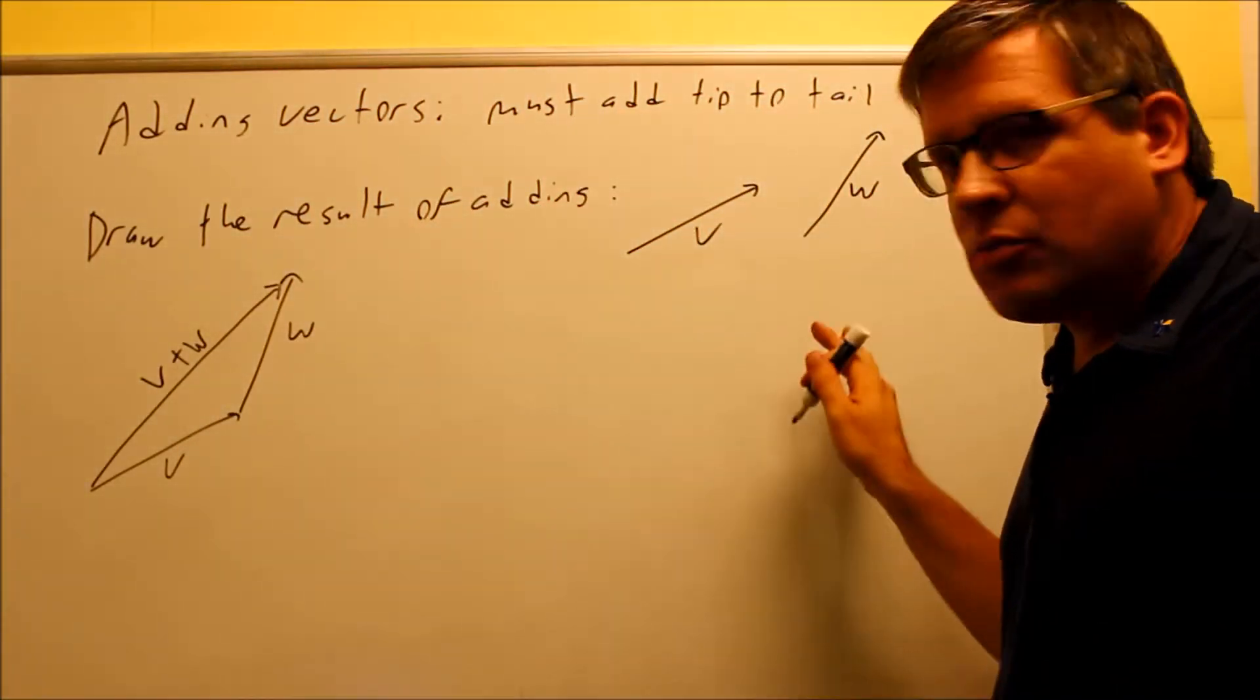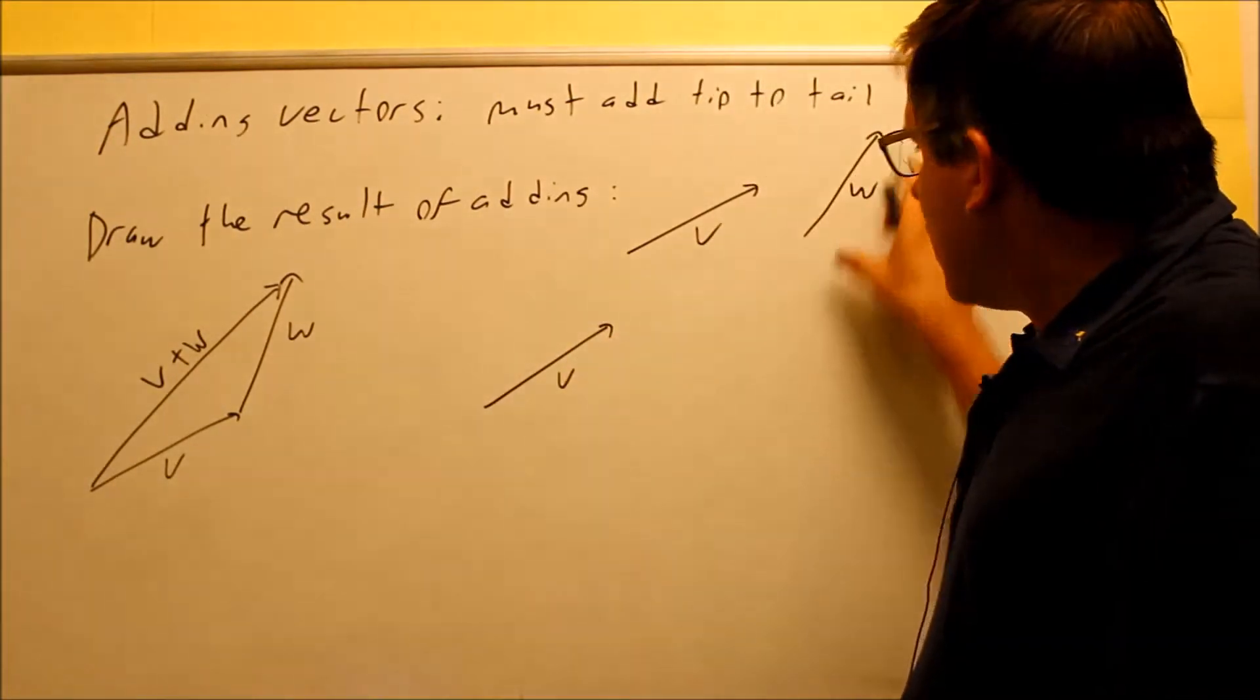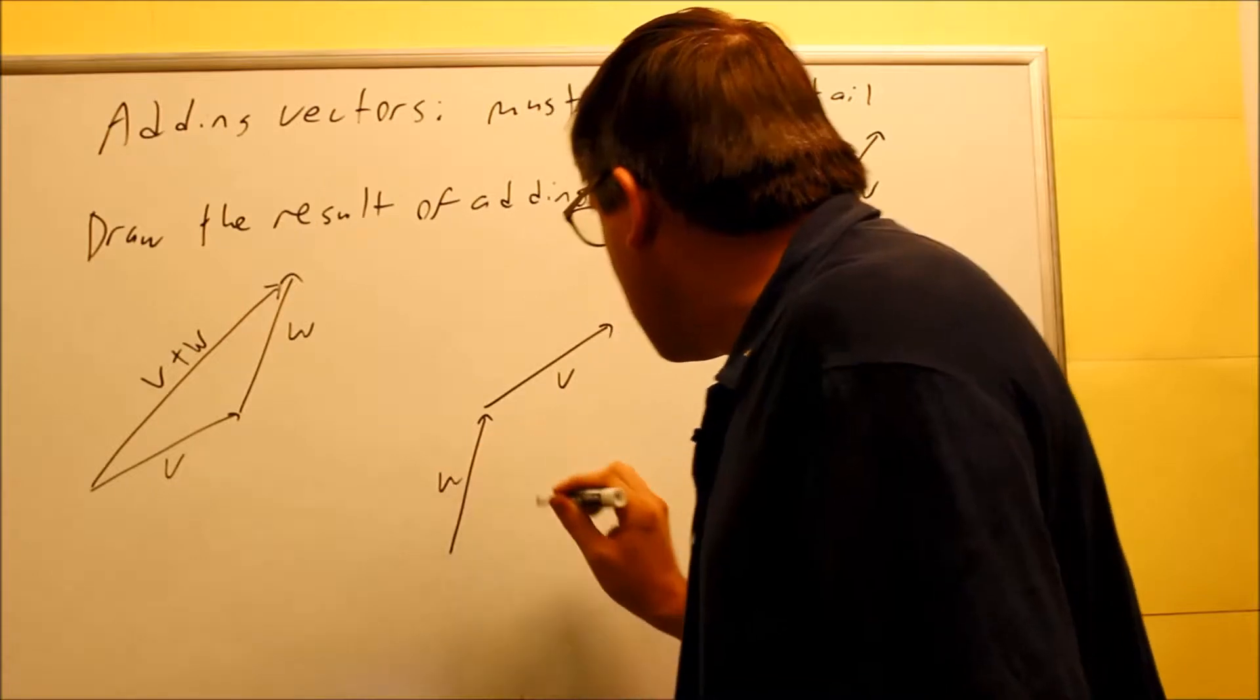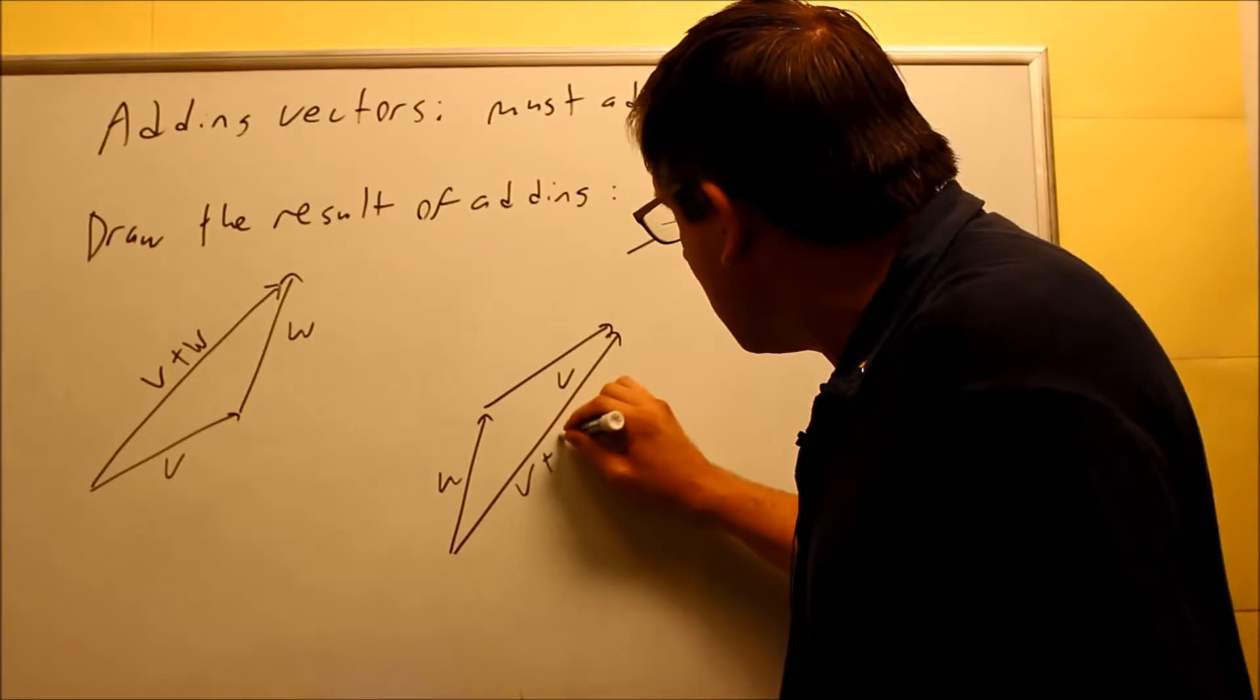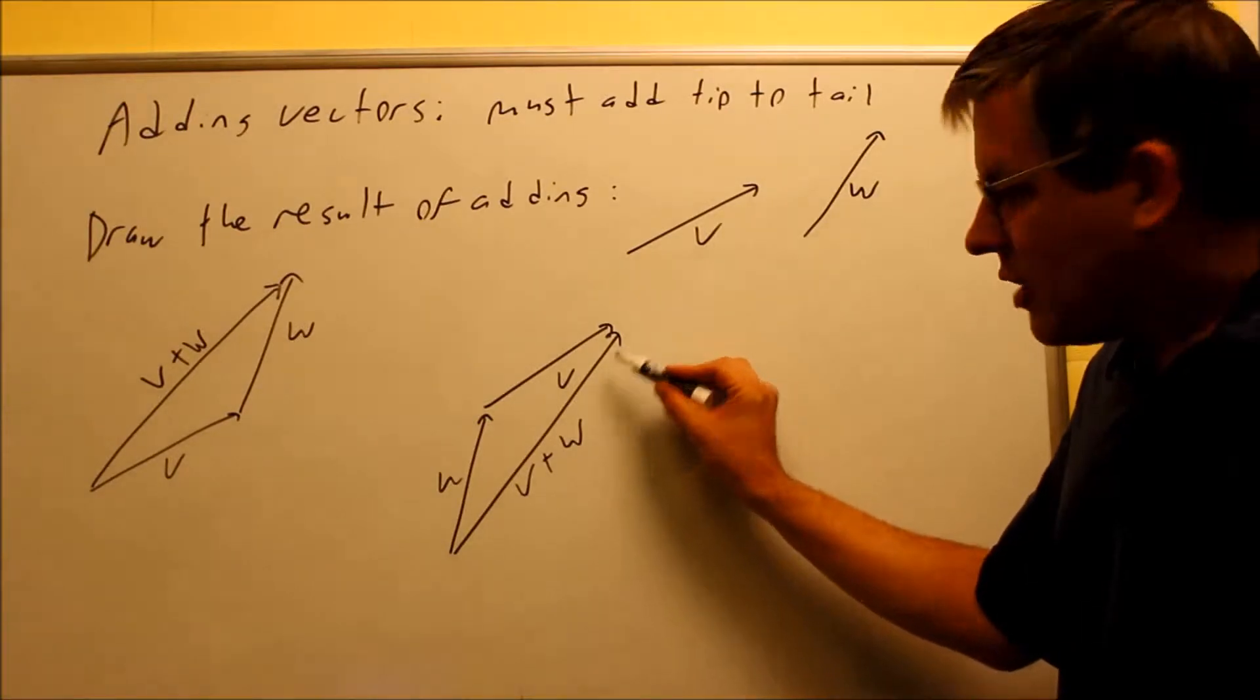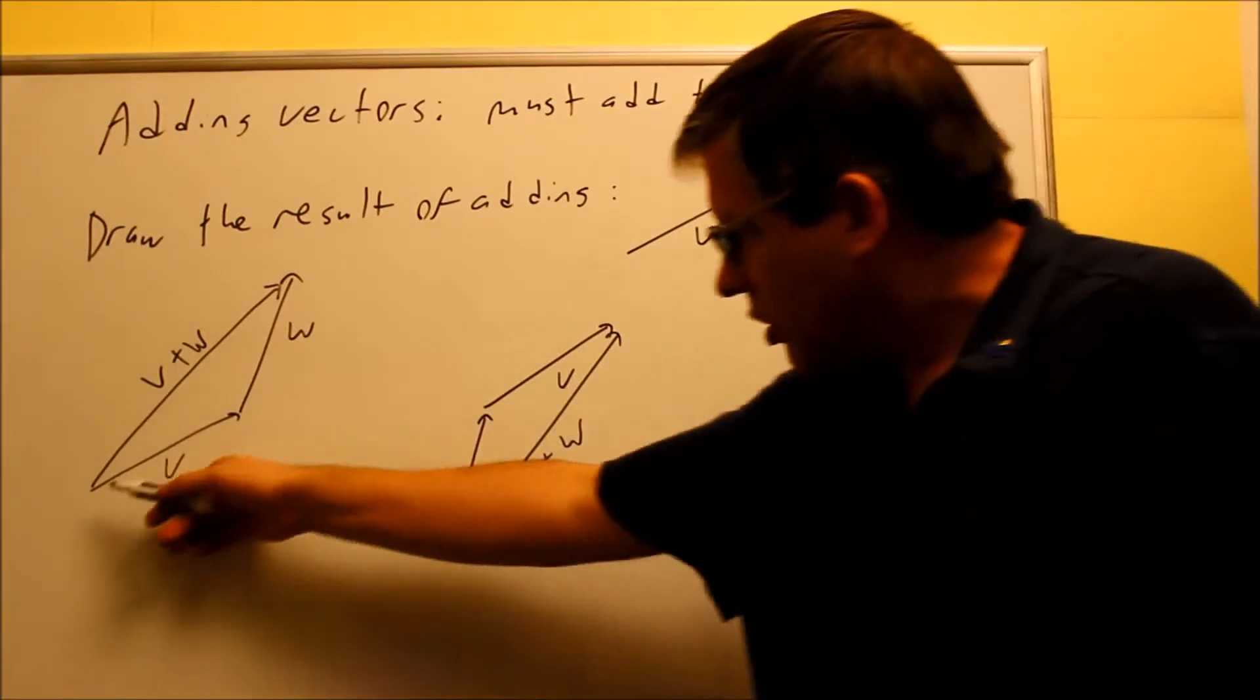Now suppose we decided to add them differently. Here's another way you could do it. Here's our V and this time I'm going to put W and attach it here. So if I do that, now it's going to look like this. Here's my W. And when I draw a line connecting it from the starting point to the ending point, notice that we get exactly the same answer. We have it going up and to the right. The length of this is the same as that one. So actually these would be the same.